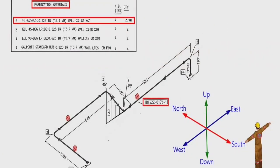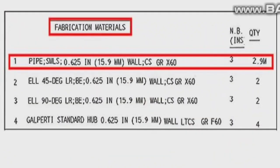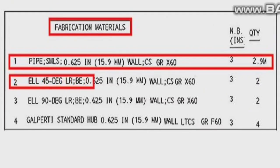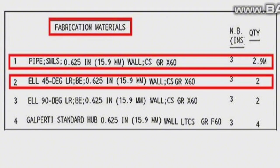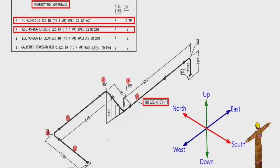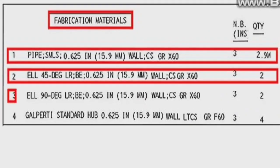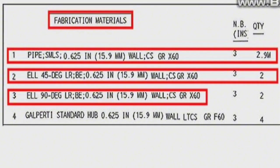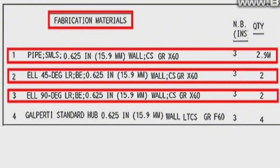Detail number 2 was used in two places in the pipe drawing: 45 degree elbow, long radius, wall thickness is 0.625 inches or 15.9 millimeters, carbon steel, grade is X60, elbow size is 3 inches, quantity is 2 pieces. Detail number 3 was used in two places also: 90 degree elbow, long radius, wall thickness is 0.625 inches or 15.9 millimeters, carbon steel, grade is X60, elbow size is 3 inches, quantity is 2 pieces.